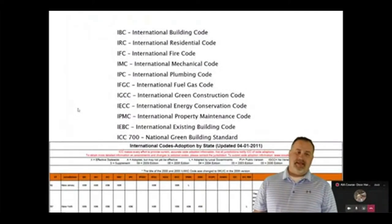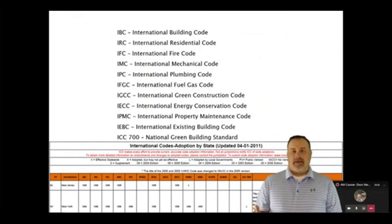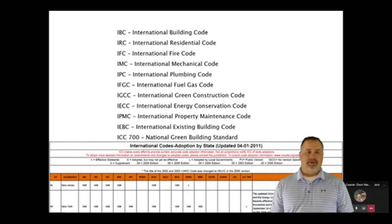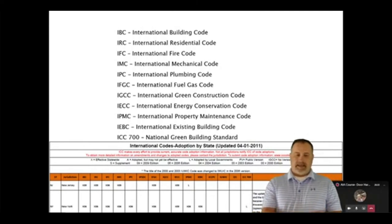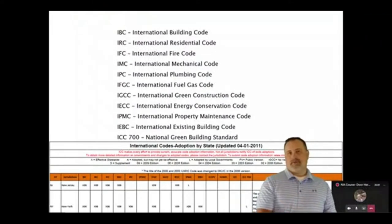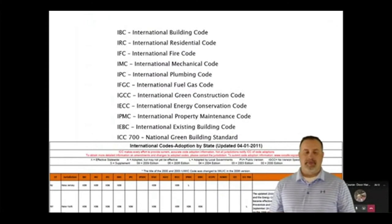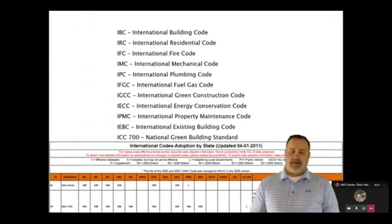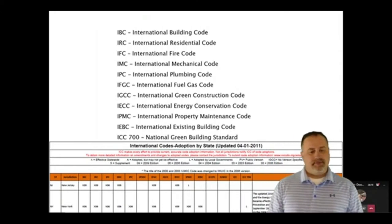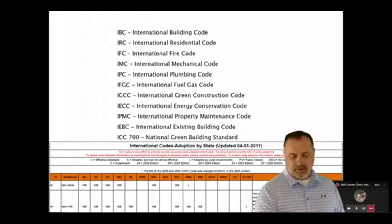In order to appropriately specify and supply hardware in a healthcare facility, you have to know your local building codes. This example shows the upper northeast — New Jersey and New York — but follow your local building code to help understand what you're doing in your facility, why you're doing it, and make sure you meet local standards so you can specify the correct hardware in those openings.